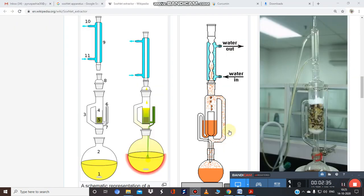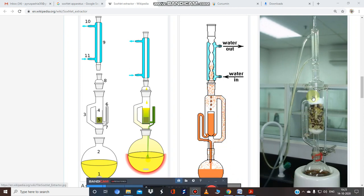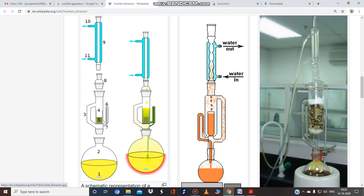Turmeric powder is subjected to extraction with alcohol in the Soxhlet apparatus. This is the Soxhlet apparatus where you put the drug in the extraction chamber unit. This is the siphon tube and this is the side tube.